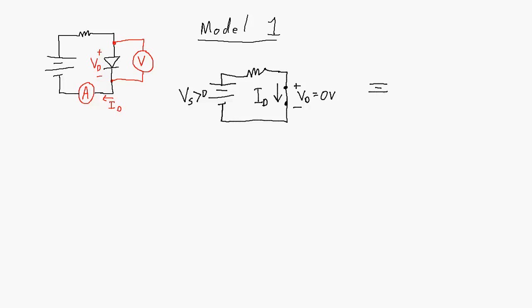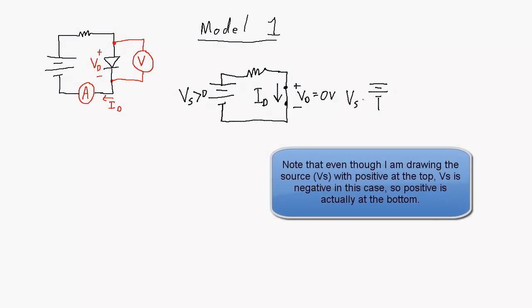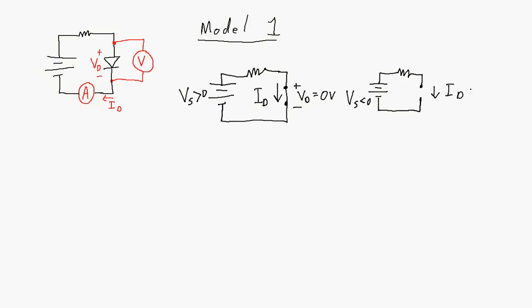Now if the source voltage is less than 0 volts, this is the reverse bias configuration for the diode. No current is going to go through it, so we will have an ID of 0 amps, and the voltage across the diode is simply going to be whatever the source voltage is. This is a very simple model. The next model is only a little bit more complicated, and it actually does a much better job of representing the diode itself.